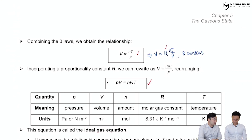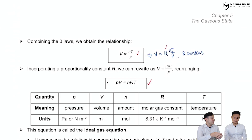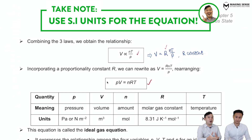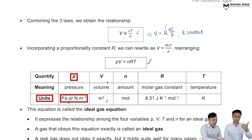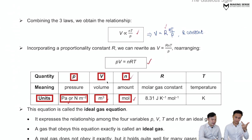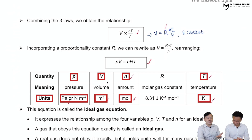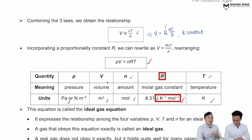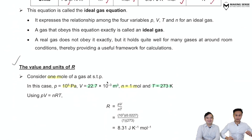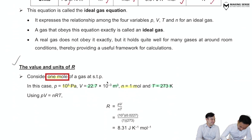A critical skill is applying this equation correctly in exams. Many careless mistakes come from unit errors. Since this is a physics-based equation, all units must be in SI: pressure in pascals, volume in m³, amount in moles, and temperature in kelvin. The R is the molar gas constant with a fixed value and fixed units — it's in your data booklet so you don't need to memorize it.